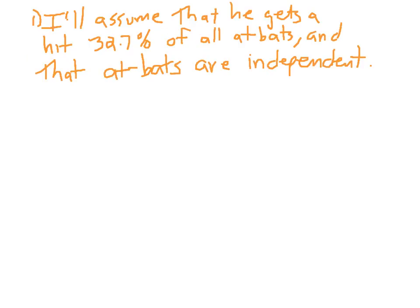In step one, stating your assumptions, I wrote: I'll assume that he gets a hit 32.7% of all at bats. There's something really important in the second part of the assumption, which is that all at bats are independent. Independent is going to be a really important vocabulary word in this chapter. Almost always, your assumption has to do with independence.